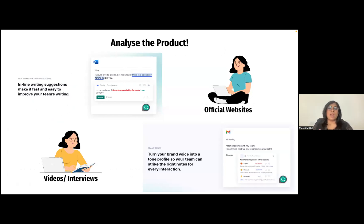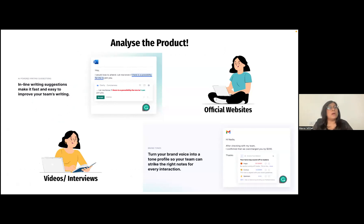The first method is to analyze the product. This includes going through all the different user journeys — for example, for Grammarly it would be the onboarding experience, writing the first document, and so on. Here also take care of nuances such as observing the product from the point of view of both a paid and a non-paid user. Official websites, online product videos, and user interviews are a great way to achieve this. This method also helps one understand who the target users of the product are.